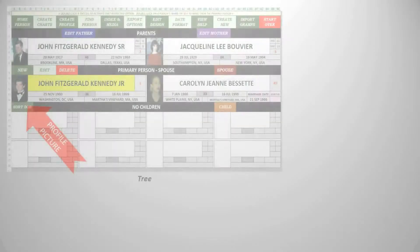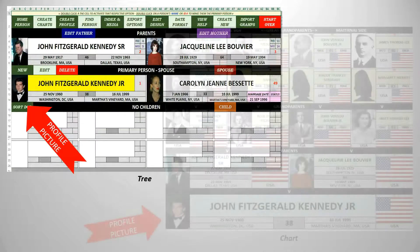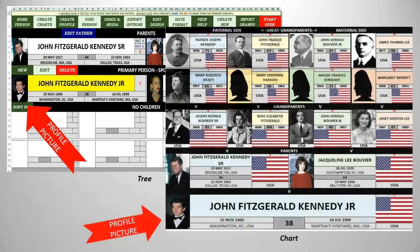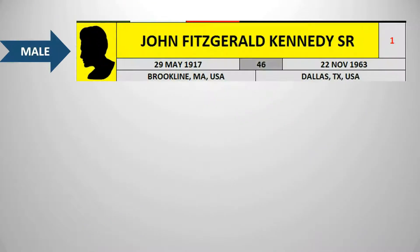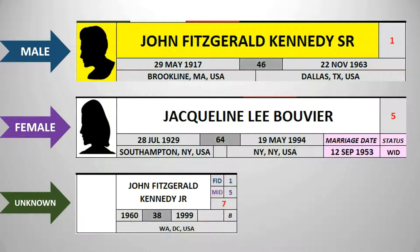The profile picture is a person's image used to represent them in the tree and on all applicable charts with images. Only one profile image is allowed to be added for a person at a time. If no image is added for a person, then a default silhouette will populate based on the person's sex. If their sex is unknown, then no image will populate.